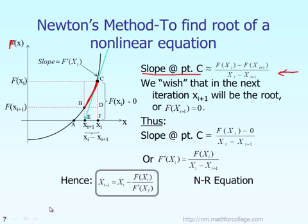In the next iteration, we say we wish that the next estimation X sub i plus 1 will be the root. In the first iteration we guess the root is X sub i, and in the next iteration the estimation for the root is X sub i plus 1. It is not exactly equal to the root yet, but we wish that in the next iteration X sub i plus 1will be the root. If X sub i plus 1 is the root, by definition the function evaluated at X sub i plus 1 should equal zero.